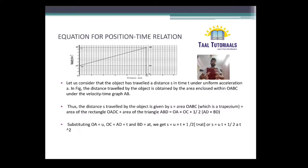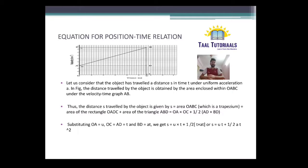That is equal to OA into OC for the rectangle, plus half into AD into BD for the triangle. Where OA we substitute as U, OC we substitute as T, and AD is equal to T. So BD is equal to AT. We get the formula: S is equal to UT plus half AT square. This is the second equation of motion.